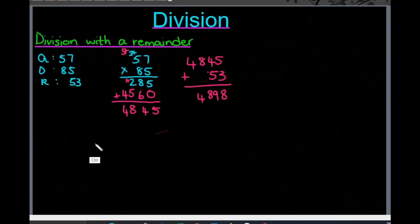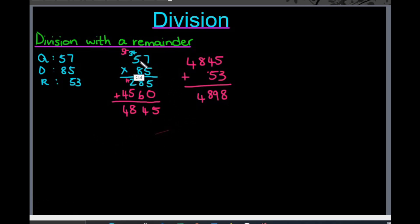For the last question, we had our quotient which was 57, our divisor which was 85, and our remainder which was 53. We had to work out what was the dividend — basically working our way back. I took 57, multiplied it by 85, and got 4,845. Next I added the 53 and got 4,898.